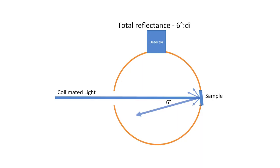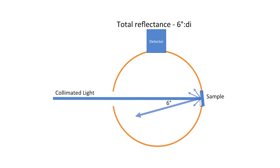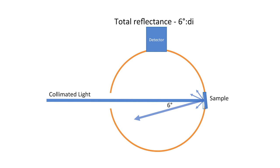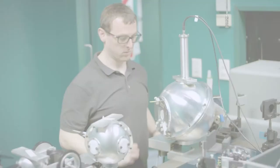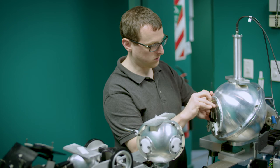We press the sample against the port on a sphere lined with highly reflecting white material and illuminate the sample at six degrees from normal. All of the light that is reflected off the sample whether diffusely or in the specular direction is captured by the sphere and collected by a detector mounted on the outside of the sphere looking in. This measurement is also primarily about colour and is largely insensitive to the texture of the surface.